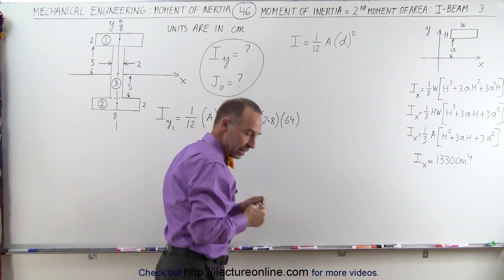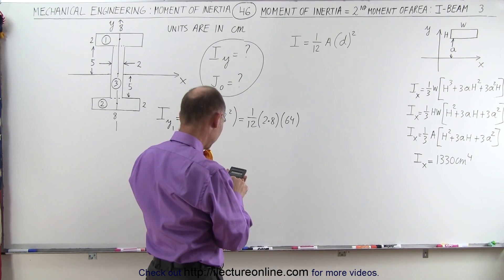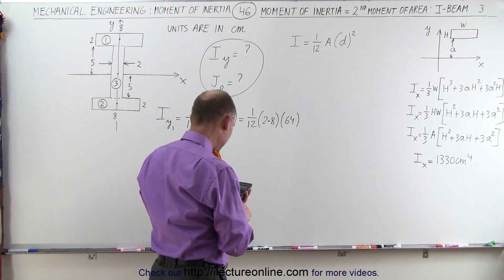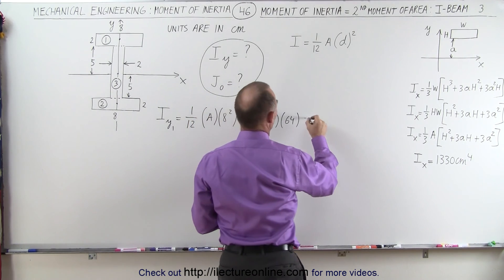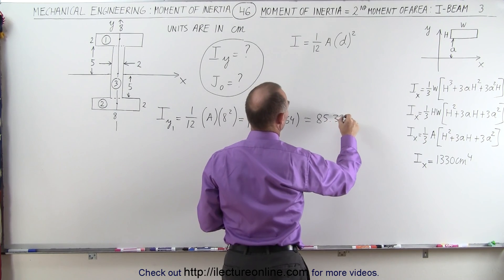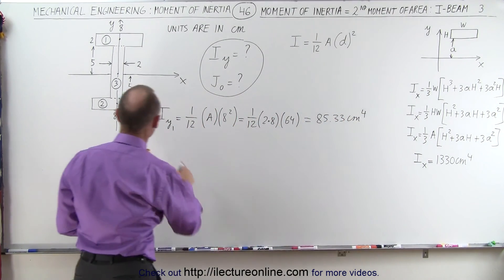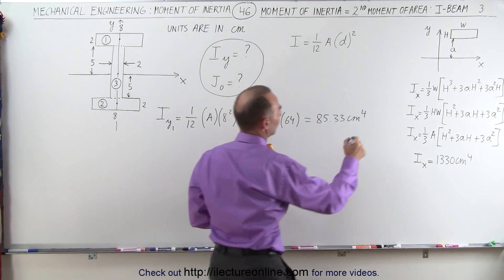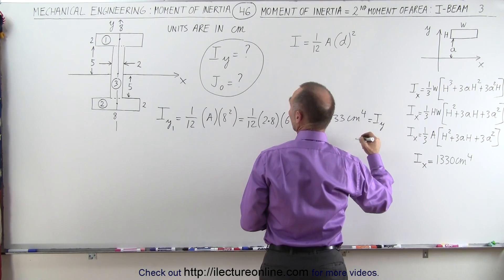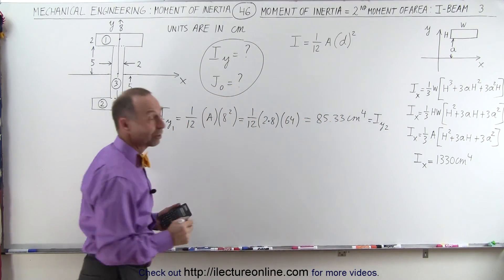With a calculator, that's 16 times 64 divided by 12, and we get 85.33 centimeters to the fourth power. We have two of those sections, so this is also equal to I relative to the Y-axis for section 2 as well — we have two similar sections.